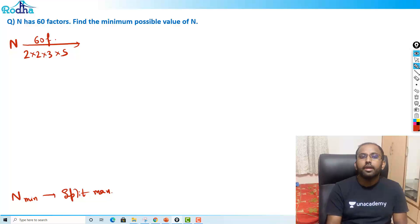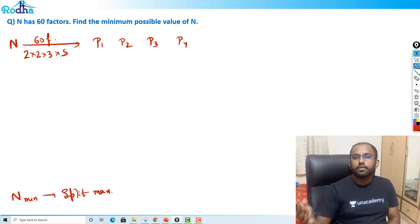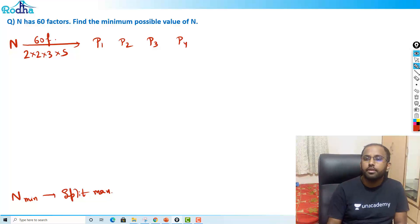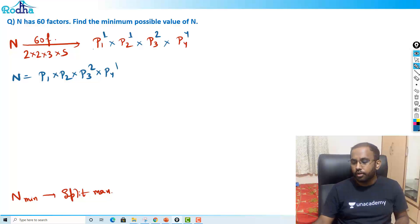60 can be split like 2×2×3×5, that means in terms of four prime numbers. Let's say my four prime numbers are p1, p2, p3, and p4. Those who don't know this concept can watch the factors video on number system. I've discussed this concept there of maximum splitting. In this basically, p1 has got factor 1 so power 0, p2 has got factor 2 so power 1, p3 has got factor 3 so power 2, p4 has got factor 5 so power 4. So N is of the form p1 × p2 × p3² × p4⁴.